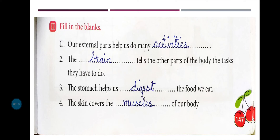हम जो खाना खाते हैं उसे पचाने का काम हमारा stomach करता है। Okay, number four पर है — हमारी body के अंदर जो flesh के टुकड़े हैं, जो flesh का part है उसे muscles कहते हैं। तो हमारे body के muscles को जो हमारी skin है वो ढाक लेती है, cover कर लेती है। तो यहाँ पर: skin covers the muscles of our body।